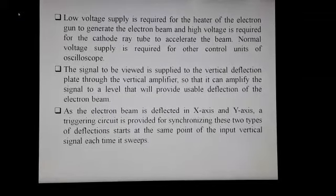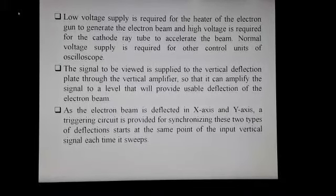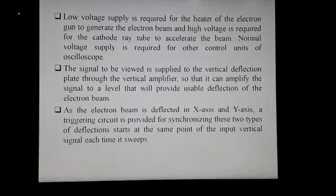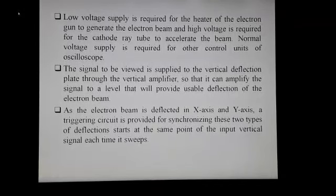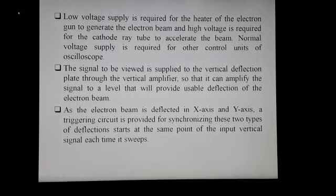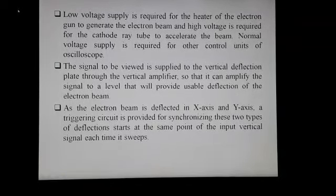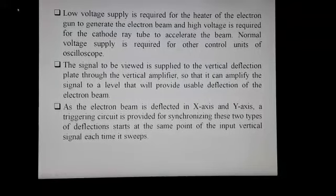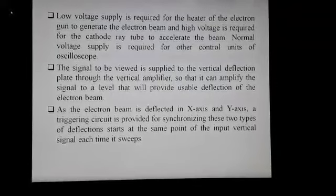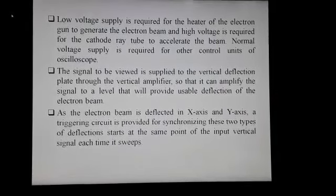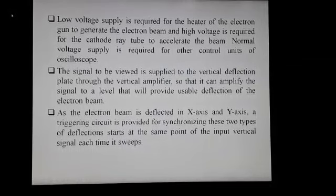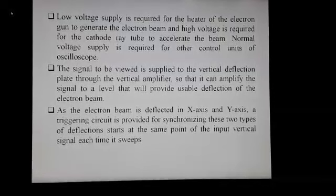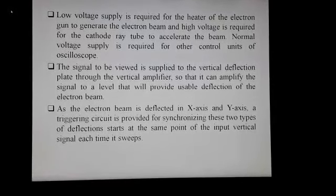Low voltage supply is required for the heater of the electron gun to generate the electron beam, and high voltage is required for the cathode ray tube to accelerate the beam. Normal voltage supply is required for other control units of the oscilloscope. The signal to be viewed is supplied to the vertical deflection plate through the vertical amplifier so that it can amplify the signal to a level that will provide usable deflection of the electron beam. A triggering circuit is provided for synchronizing the x-axis and y-axis deflections so they start at the same point of the input vertical signal each time it sweeps.